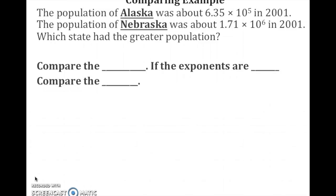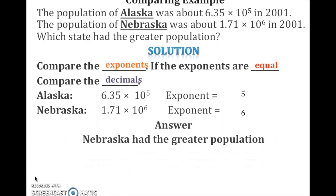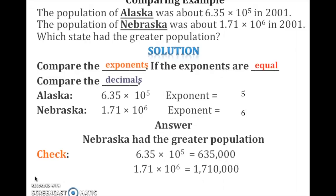Let's look at a real-world example. The population of Alaska was about 6.35 times 10 to the 5th in 2001. Nebraska's was about 1.71 times 10 to the 6th. Which state had the greater population? We compare the exponents — Alaska's is 5, Nebraska's is 6. Nebraska has the greater exponent, so Nebraska had the greater population. We can verify this by converting from scientific to standard notation.